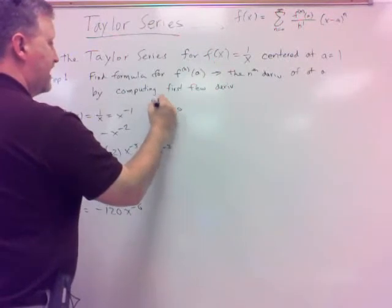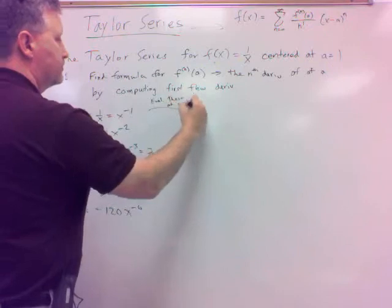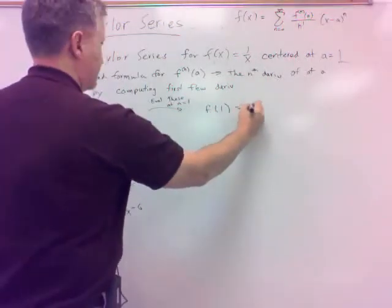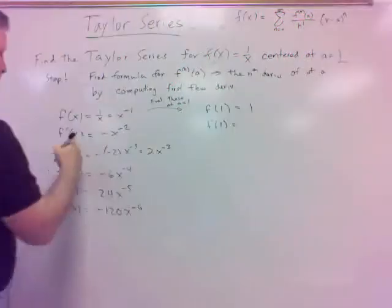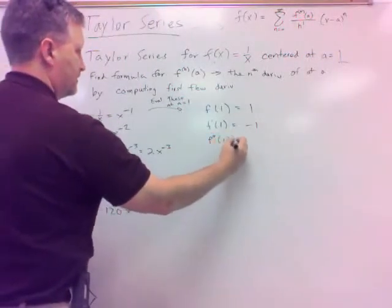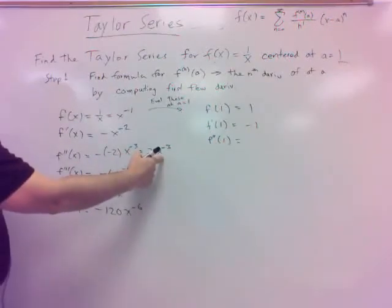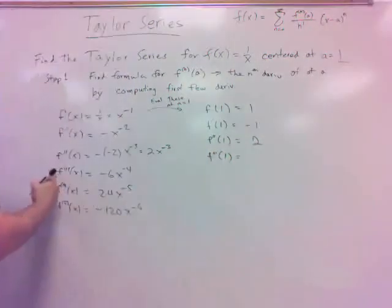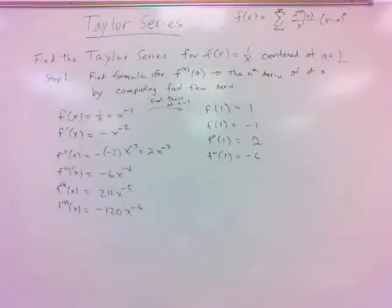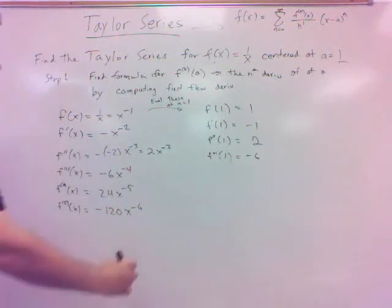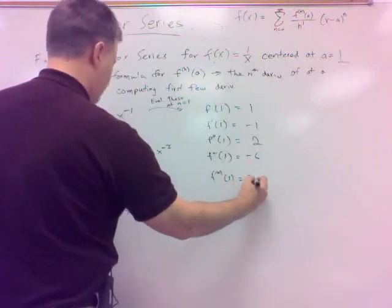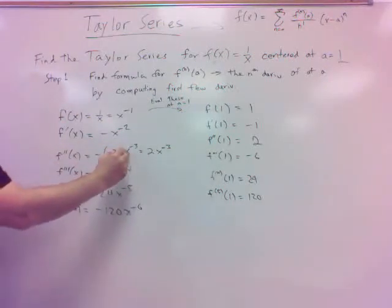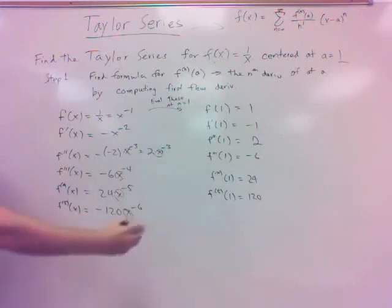Now let's evaluate these at a equals 1 — our center. f of 1 is 1. f prime of 1 is negative 1. f double prime of 1 — f double prime is 2x to the minus 3 — so that's just 2. Third derivative at 1: negative 6. The good thing about centering at 1 with this one is the x part's just 1. Fourth derivative at 1: 24. Fifth derivative at 1: negative 120.